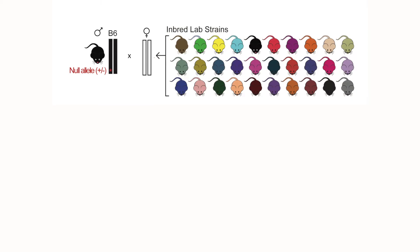Also, we didn't want to edit the genome of many strains independently because this could introduce off-target effects that could have confounded our analysis. To efficiently express mutations on many different genetic backgrounds, we bred heterozygous mutant males on a C57 black 6J background to females from 30 different inbred lab strains.